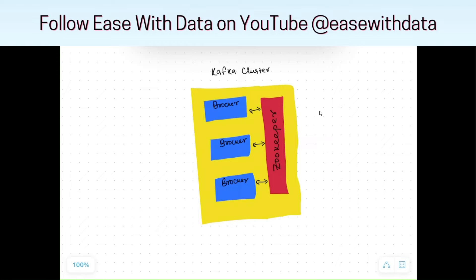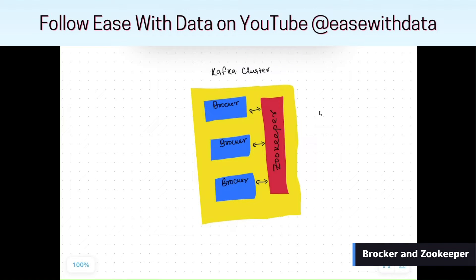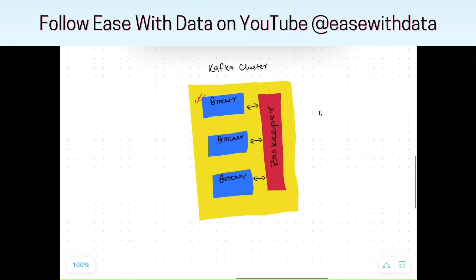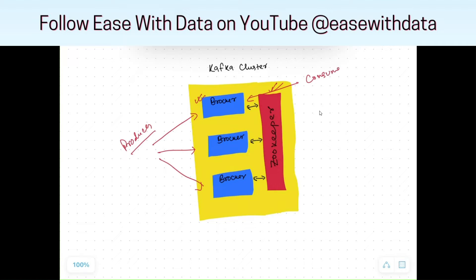In a cluster, we can have more than one server or more than one node connected. In Kafka terminology, the servers or nodes are known as brokers, and we need a manager who would maintain the metadata for these brokers — and that manager is ZooKeeper. Consider we have a producer who produces some messages, and these messages would be posted to these brokers, and the consumer will connect to these brokers in order to consume the messages.